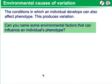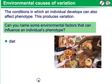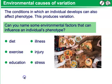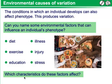Can you name some environmental factors that can influence an individual's phenotype? Things like diet, illness, exercise, injury, education, and stress — any of these can contribute to an individual's overall phenotype.